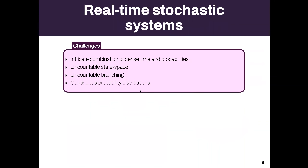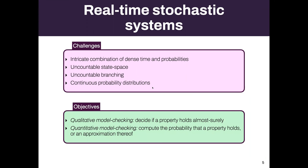The challenges of real-time stochastic systems are as follows. You have an intricate combination between time and probabilities. This kind of system generates an uncountable state space, uncountable branching because of time, and continuous probability distributions. In the previous example we had exponential and uniform distributions, but you can assume many other kinds of distributions over delays. Our objectives are: model checking, which can be qualitative — can we decide whether a property holds almost surely — or quantitative, which is to compute the probability that some property holds, or to compute an approximation of this probability.